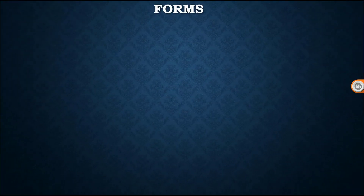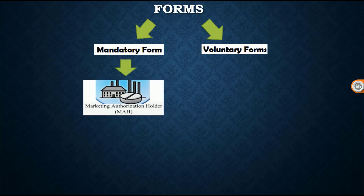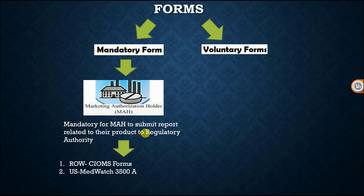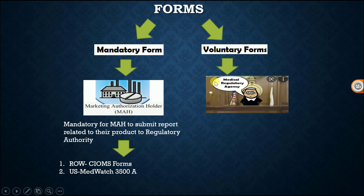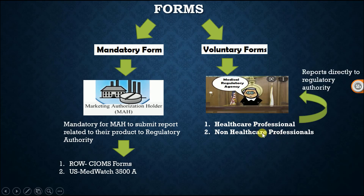ICSRs are filled by two types of forms: mandatory forms and voluntary forms. Mandatory forms are filled by marketing authorization holders — it is mandatory for them to submit reports related to their products to regulatory authorities. Examples of mandatory forms are the CIOMS form and US MedWatch 3500A form. For voluntary forms, medical regulatory agencies receive forms from healthcare professionals as well as non-healthcare professionals, who report directly to regulatory authorities.